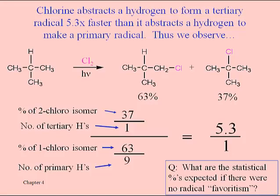There are a couple of exercises at the end of chapter 4 that are based on what we just talked about in the last part, relating these known percentages of product to what we might expect if we didn't know that there was a favoritism for particular radicals to be formed.